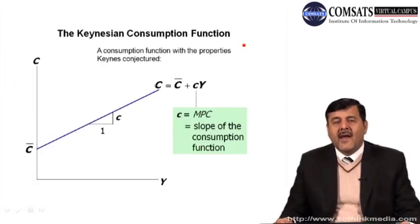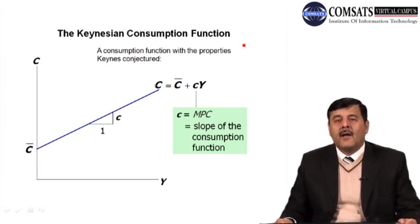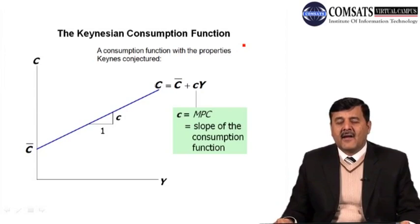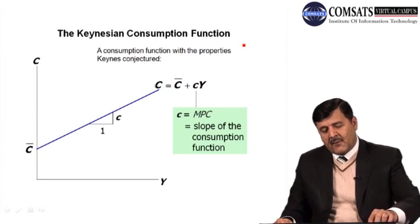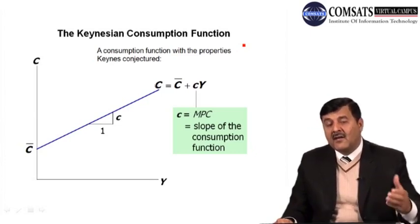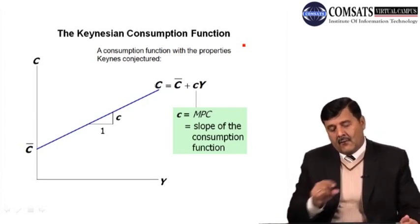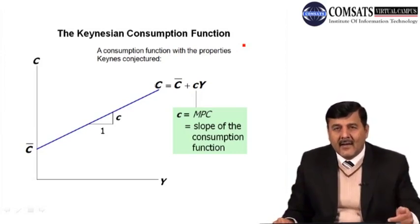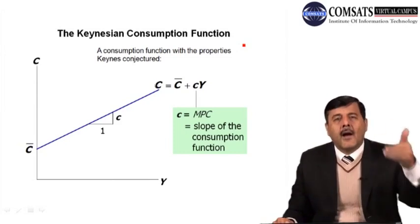Keynes' consumption function can be written as C = C̄ + cY, where C̄ is a constant intercept and c (small c) is the marginal propensity to consume, which tells us the change in consumption due to change in income. On the diagram, the Y-axis measures consumption and the X-axis measures income. The consumption function starts above zero because even when income is zero, there is some consumption.